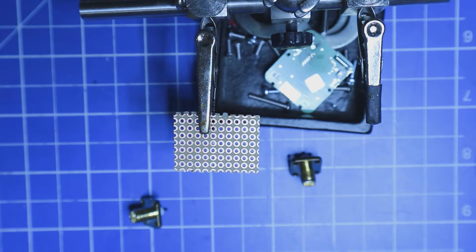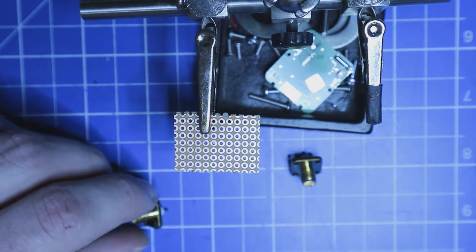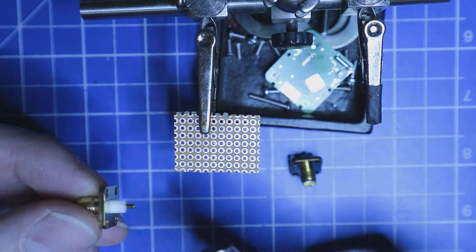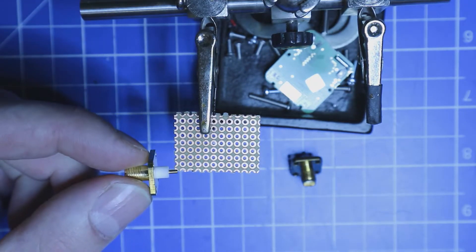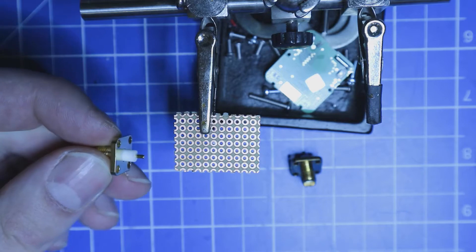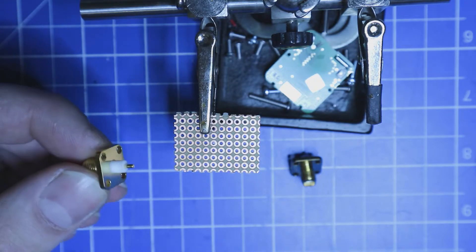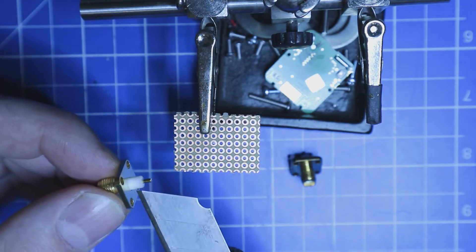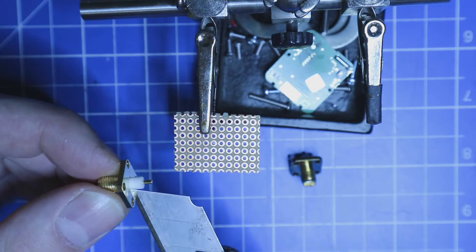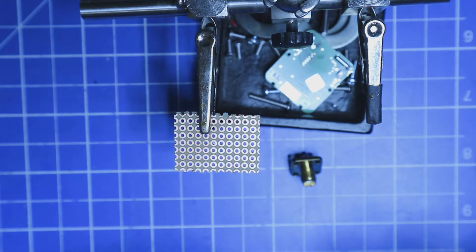The first thing we have to do is to mount our connectors. I'm using very basic SMA connectors I have laying around here. In my case I'm going to cut away the insulation here and solder it onto the perfboard.